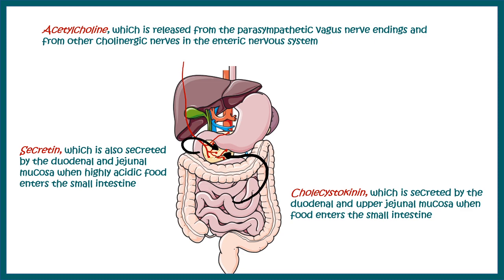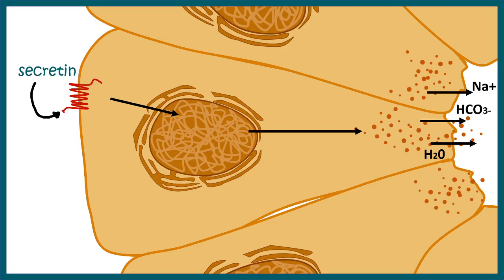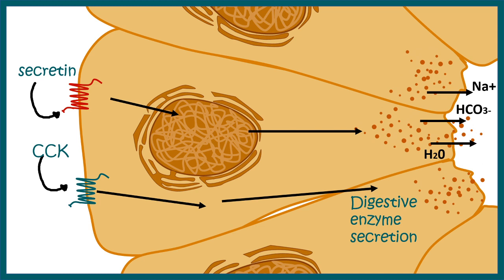At the molecular level, secretin is a peptide hormone that binds to a G-protein coupled receptor on the acinar cell, and this signaling ultimately leads to sodium ion and bicarbonate ion secretion into the lumen. Cholecystokinin also binds to its receptor on acinar cells and helps in digestive enzyme secretion. CCK-mediated signaling elevates calcium inside the cell, which ultimately triggers the zymogen granules to be secreted into the lumen. This is how pancreatic secretion is regulated by hormonal and neuronal mechanisms.